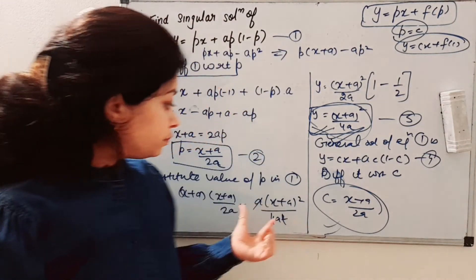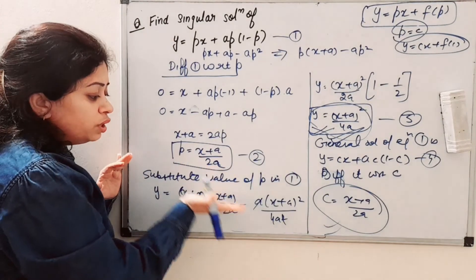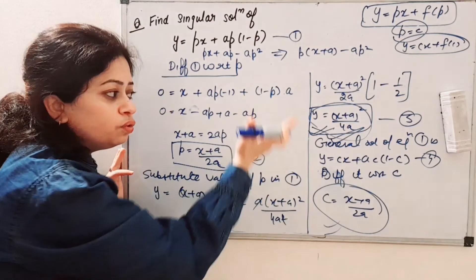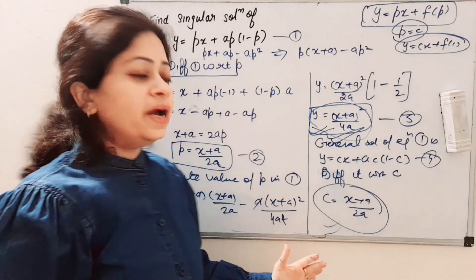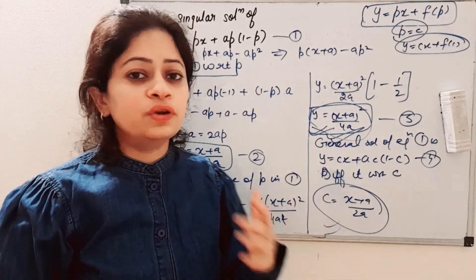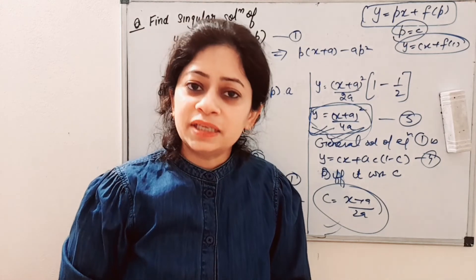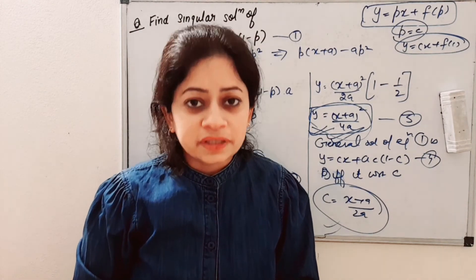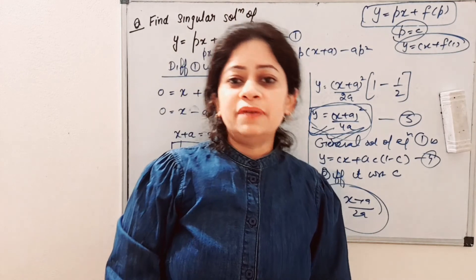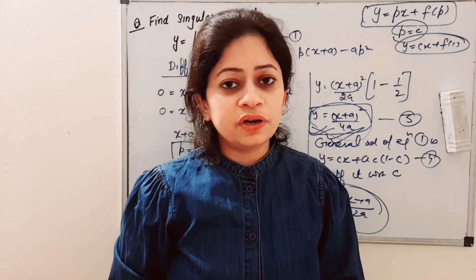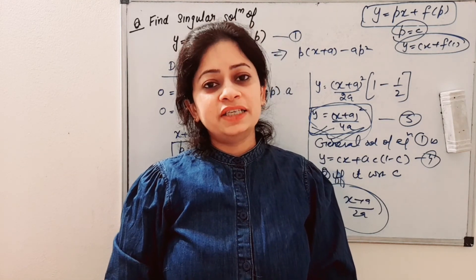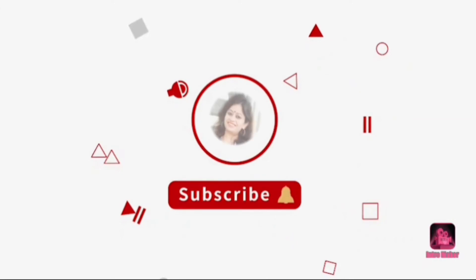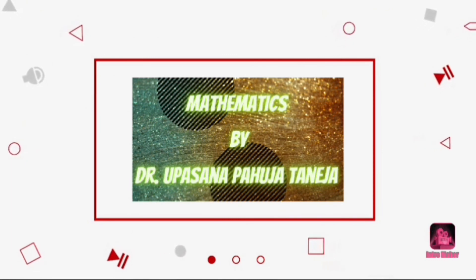If we have only one solution from step 3, we do not need to go further — we can directly state that is the singular solution. Otherwise, we follow all the steps to find it. We now know the method and the steps. If you are finding this useful, please subscribe to my channel. You can follow me on Telegram and Instagram as well — this is Mathematics by Dr. Upashanatha Neja. Do tell me in the comment section if you are liking it, and thank you so much for watching.